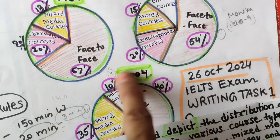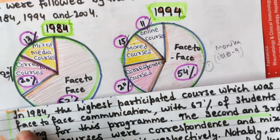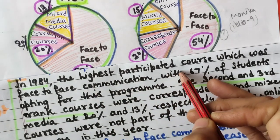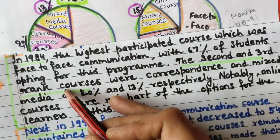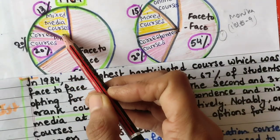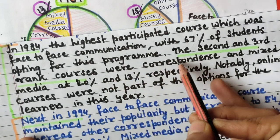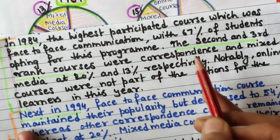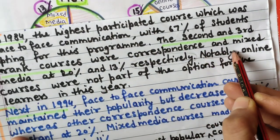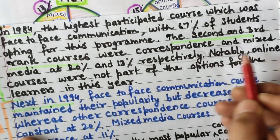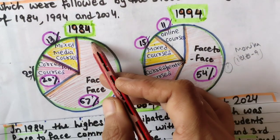For the detail paragraph on 1984: 'In 1984, the highest participated course was face-to-face communication, with 67% of students opting for this program. The second and third ranked courses were correspondence and mixed media at 20% and 13% respectively. Notably, online courses were not part of the options for learners in this year' — only three courses were available in 1984.